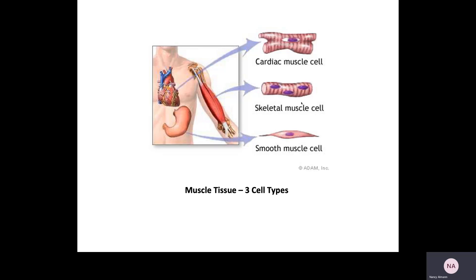The first characteristic is that skeletal muscle cells are voluntary. Cardiac muscle cells and smooth muscle cells are involuntary. In other words, you can't think 'I'm going to make my heart beat,' or 'I'm going to make material move out of my stomach into my small intestine.'